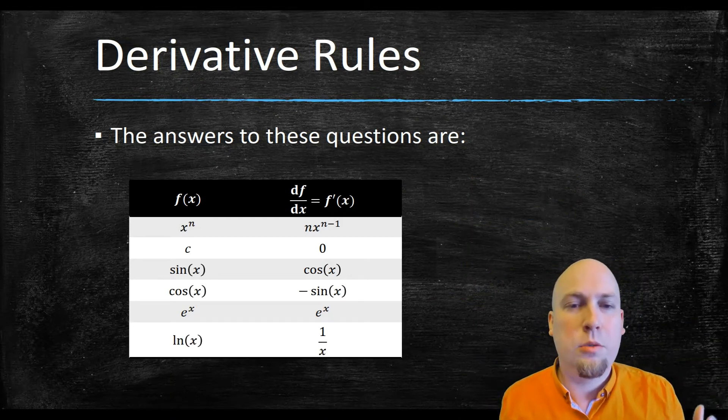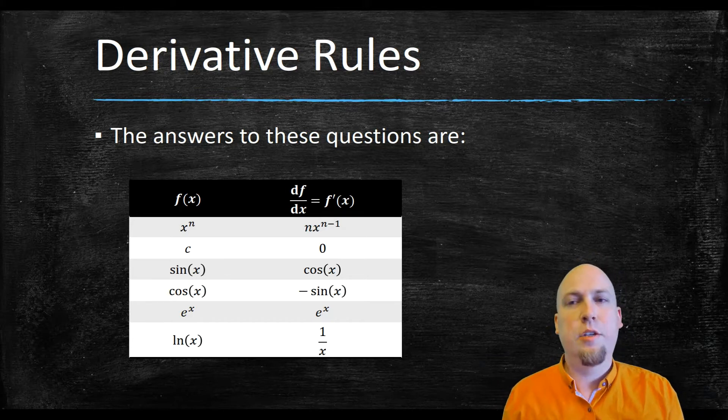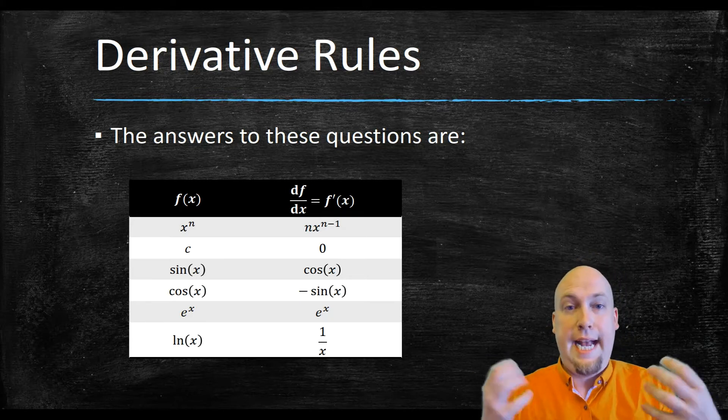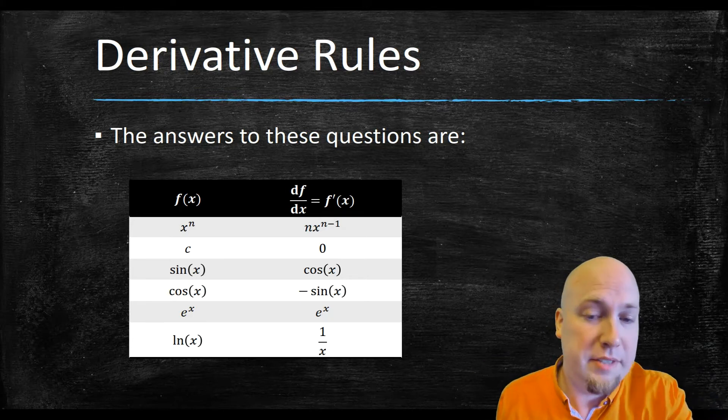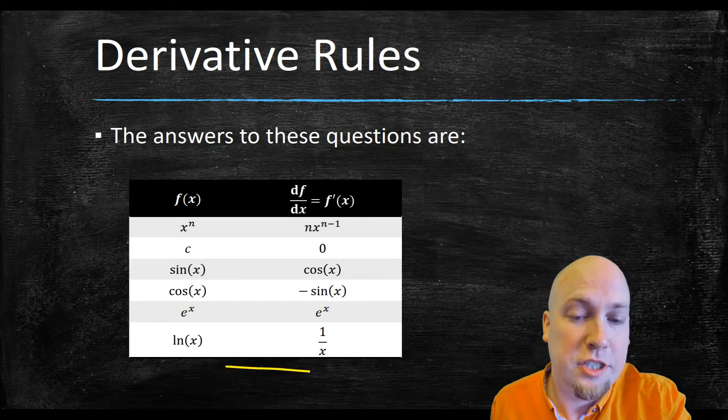One final derivative rule: the derivative of the natural logarithm of x — ln x — is just 1 over x.